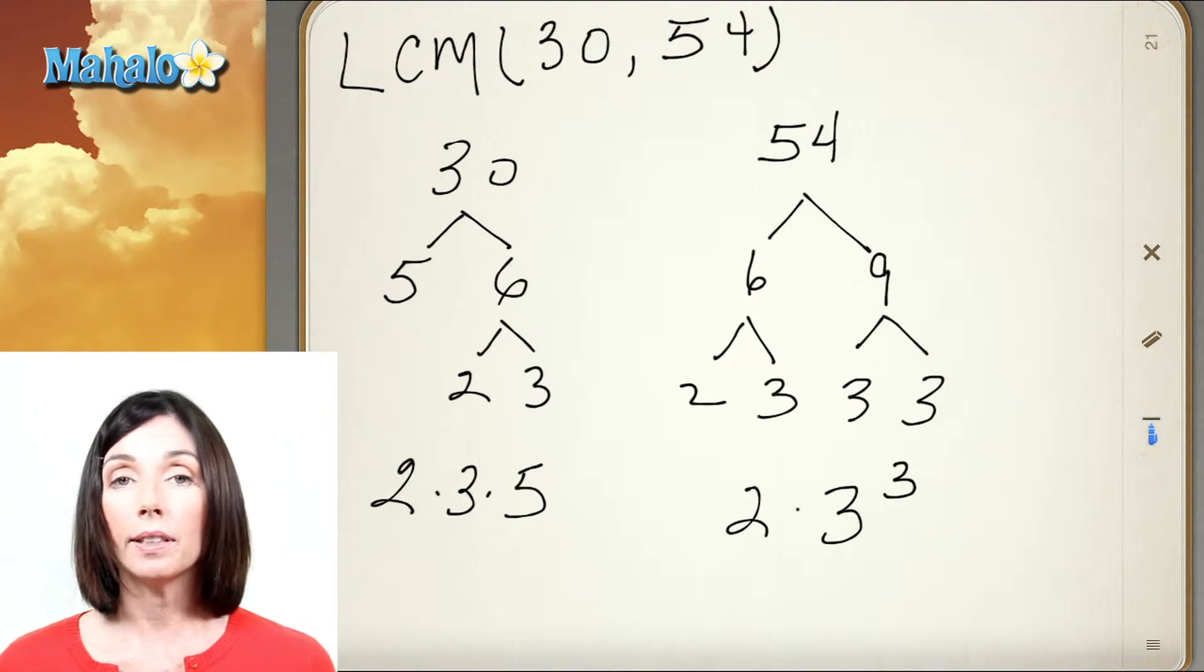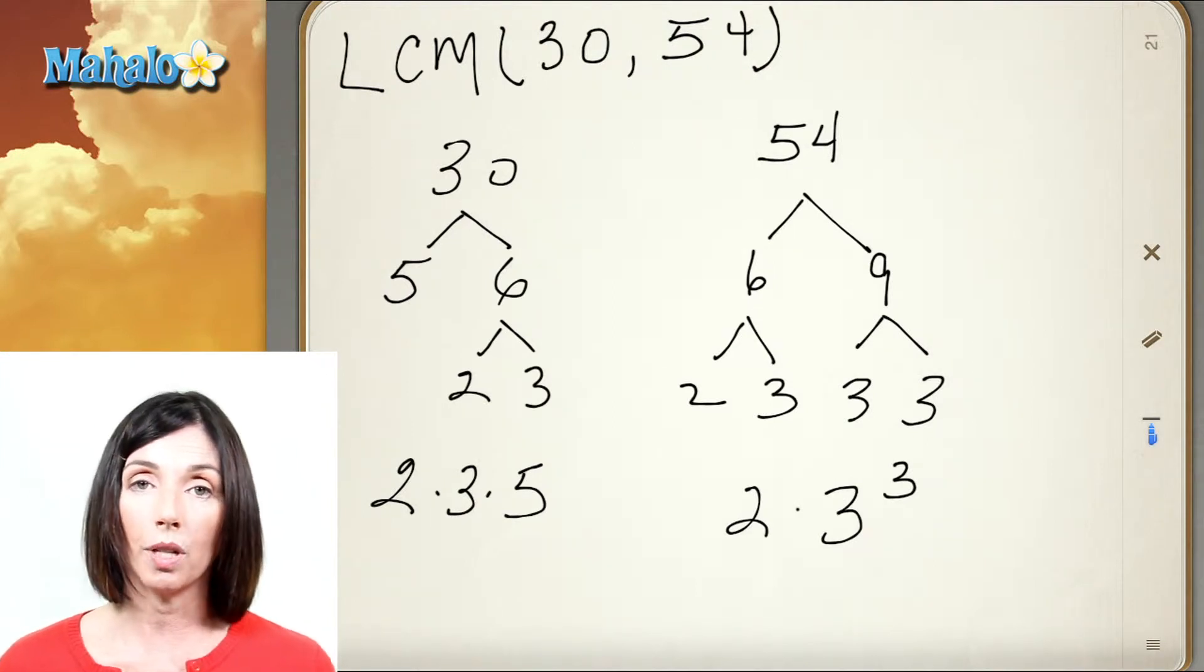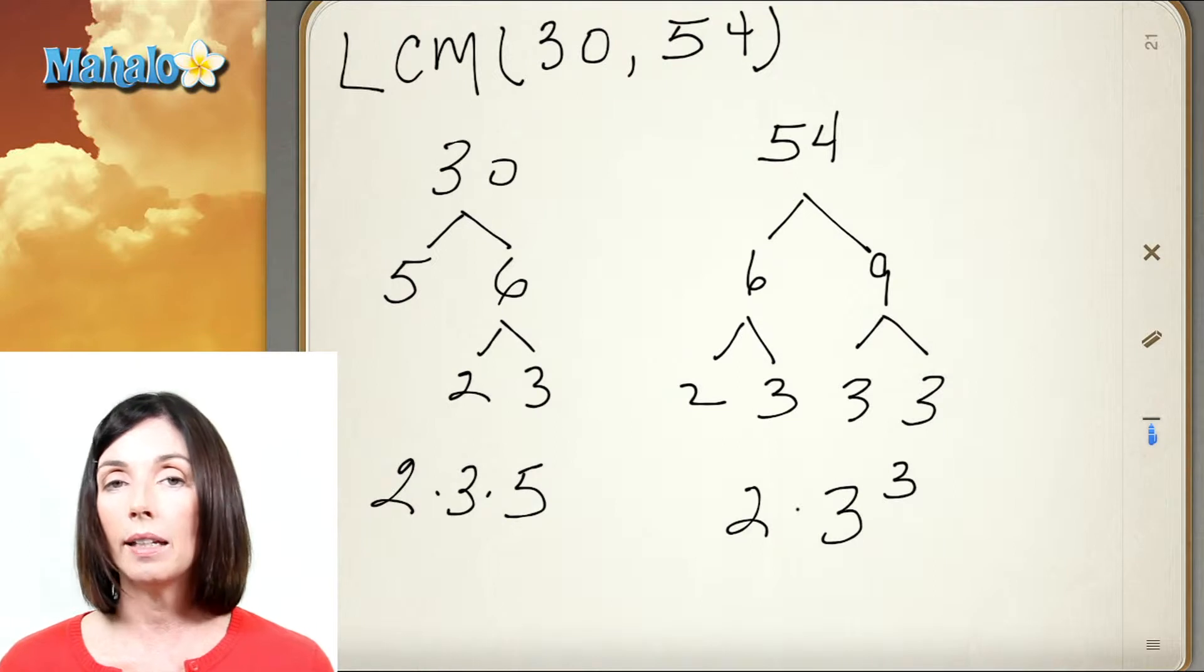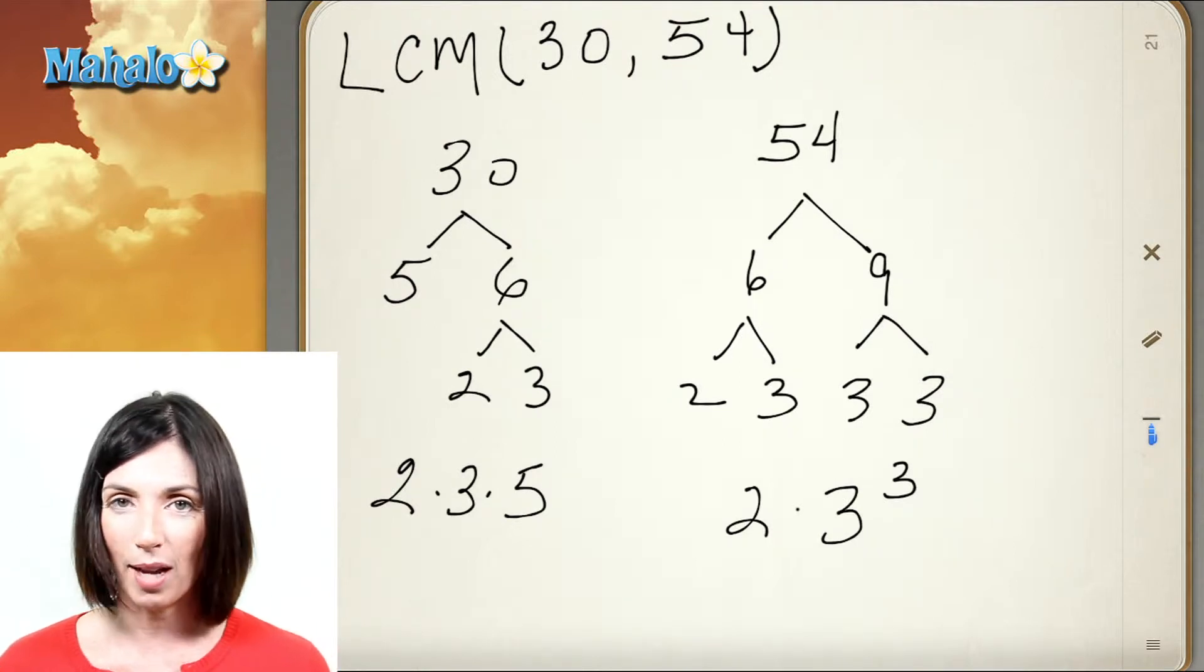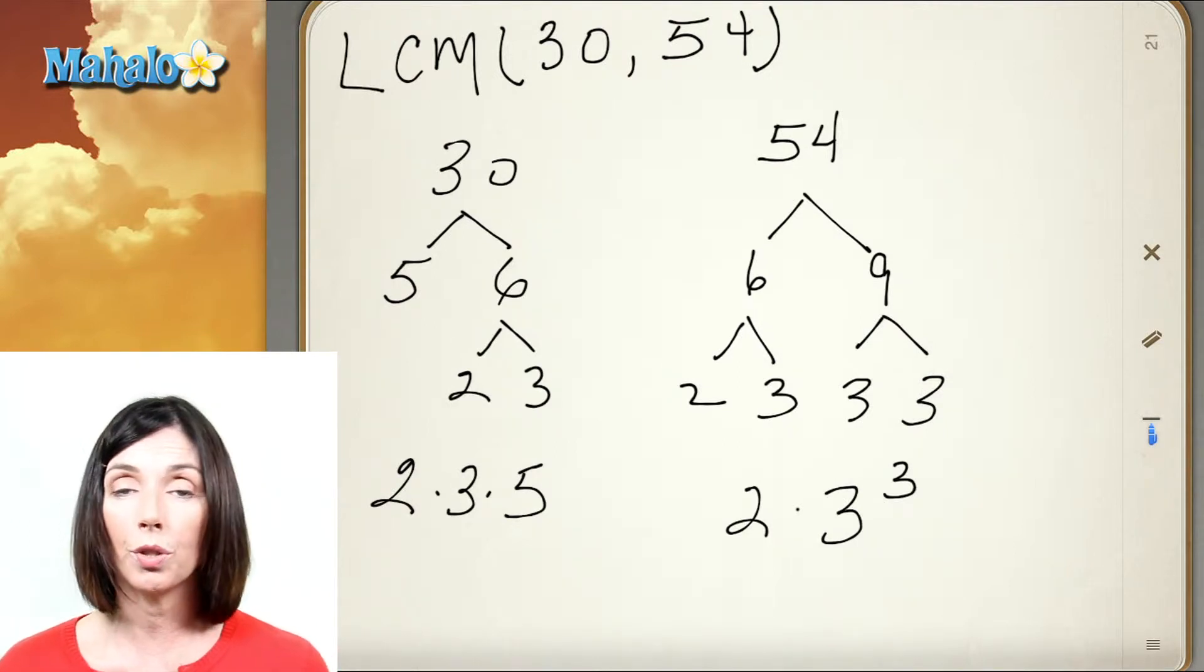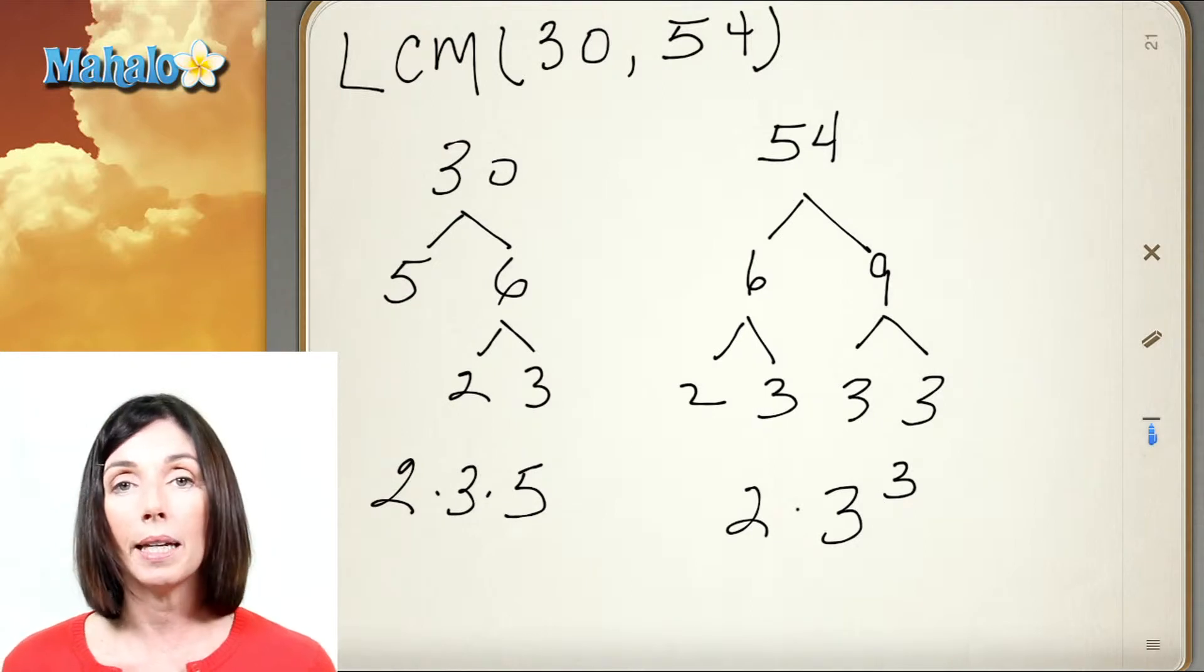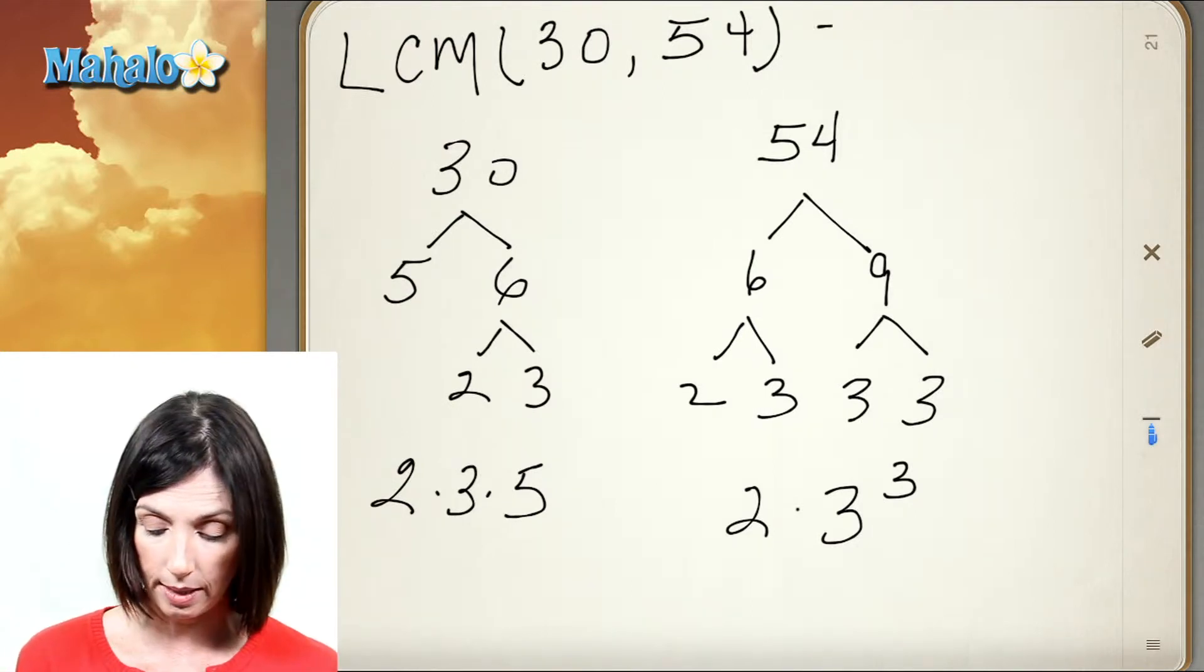Now the least common multiple of these two numbers will be the largest power of anything that appears in both prime factorizations. So we have to go through the two prime factorizations and pick out anything that's included in either.